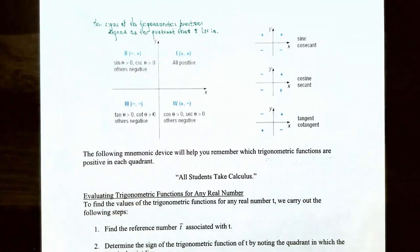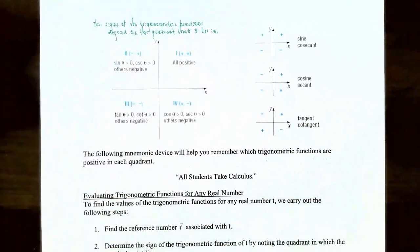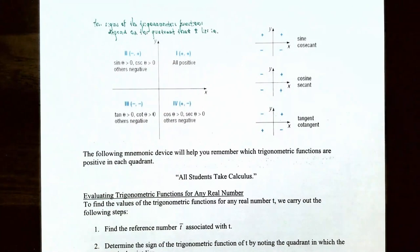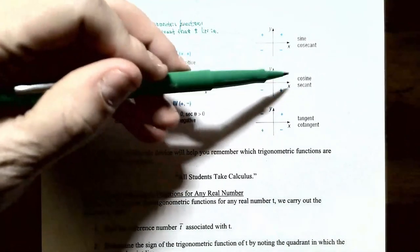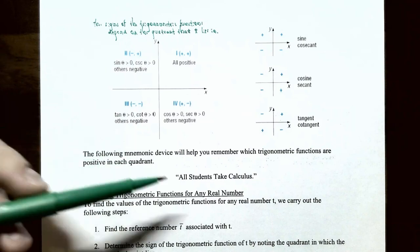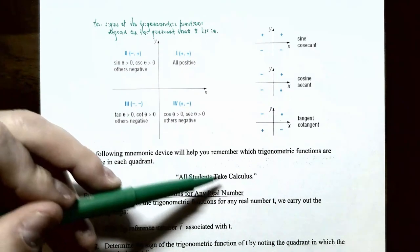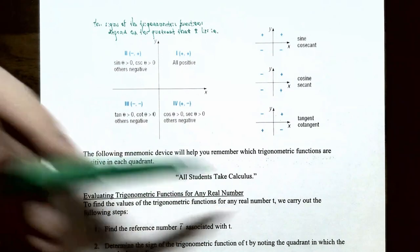As a summary: sine and cosecant are positive only when the y-coordinates are positive. Cosine and secant are positive whenever the x-value is positive. Tangent and cotangent are positive whenever the x-value and y-value have the same sign. The mnemonic device 'All Students Take Calculus' will help you remember: All functions are positive in quadrant 1, Sine is positive in quadrant 2, Tangent is positive in quadrant 3, and Cosine is positive in quadrant 4.